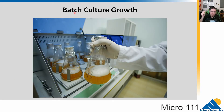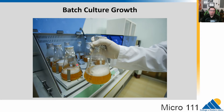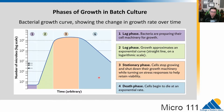Under ideal conditions, bacterial growth rates depend on temperature, nutrients, pH, and other factors. Here, a scientist is growing what we call a batch culture in a flask with liquid growth medium. The flask is on a shaker that swirls it and constantly aerates it at a constant temperature with the bacteria's favorite nutrients. This leads to what we call a bacterial growth curve.